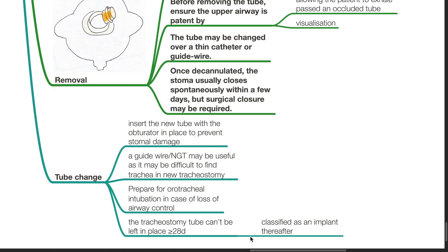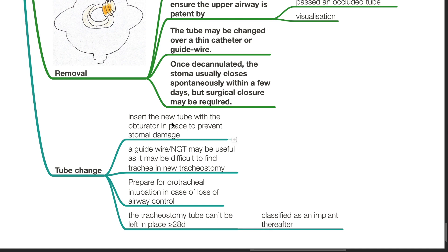Tube change: insert the new tube with the obturator in place to prevent stoma damage. A guide wire or nasogastric tube may be useful as it may be difficult to find the trachea in a new tracheostomy. Prepare for oral tracheal intubation in case of loss of airway control. The tracheostomy tube cannot be left in place for more than 28 days; otherwise it will be classified as an implant thereafter.